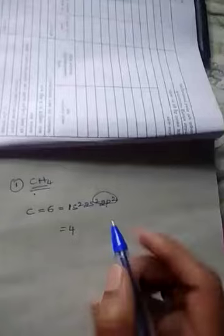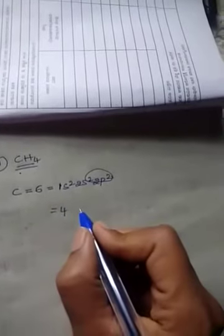Here, how many univalent atoms are there? Four univalent atoms are there. These four univalent atoms give four electrons, so we can add these two: 4 plus 4.